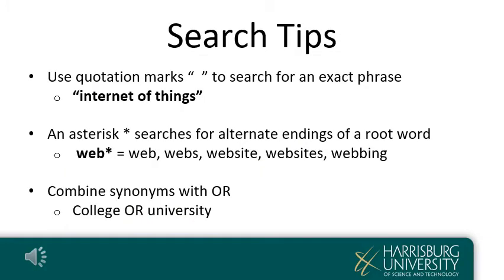There are a couple of tips you can use to get the best results out of our databases and search engines. Putting exact phrases in quotation marks will force the algorithm to treat it as one item in exactly the way that you typed it. The asterisk for truncation will search for the root word and all possible endings. And remember that if you have very similar synonyms or related terms, you can combine those with the word OR.